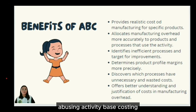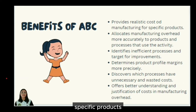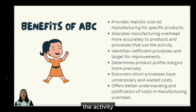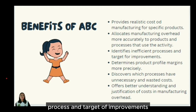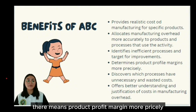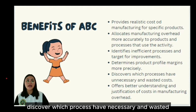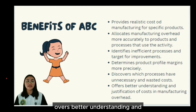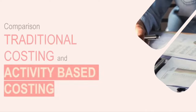The benefits of using Activity-Based Costing include: providing realistic costs of manufacturing specific products; allocating manufacturing overhead more accurately to products and processes; identifying innovation processes and targets for improvement; determining product profit margins more precisely; discovering which processes have unnecessary and wasted costs; and offering a better understanding and justification of costs and manufacturing overhead.